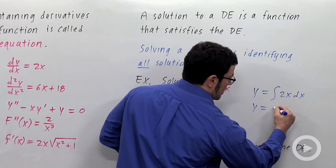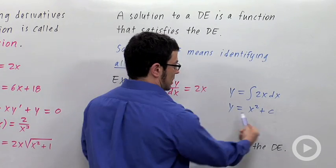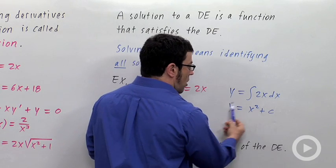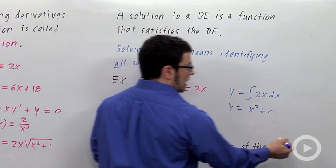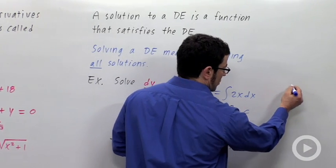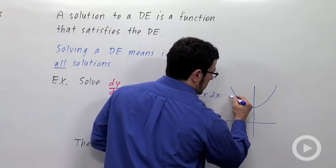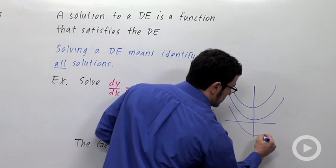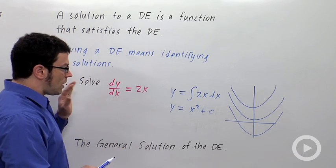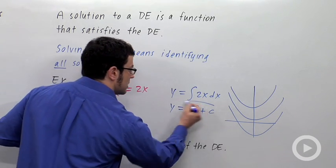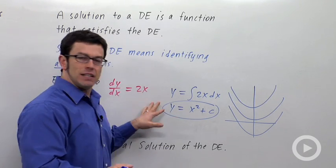So y equals x squared plus c — the anti-derivative of 2x is x squared plus c. This describes all of the functions that satisfy this differential equation; they're all parabolas. If you were to draw a picture, parabolas looking like this — these would all be solutions to this original differential equation. We call this the general solution of the differential equation, because in one formula we have every single solution.